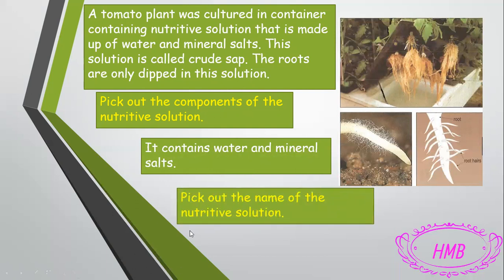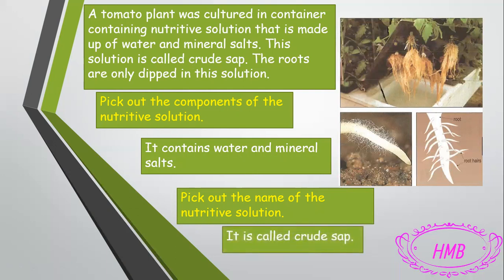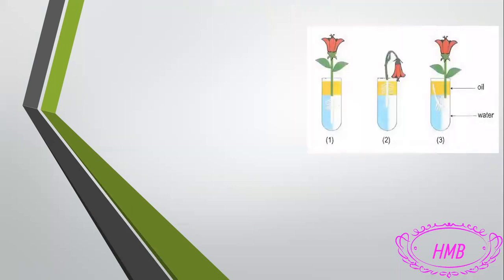The second question: pick out the name of the nutritive solution. What do we call the nutritive solution that contains water and mineral salts? It is called crude sap. So all of the answers are in the paragraph — all we have to do is copy them. Let's move now to the second part.